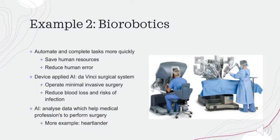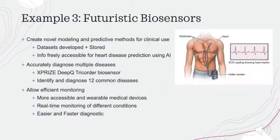Research has shown that AI-assisted robotic procedures resulted in five times fewer complications compared to surgeons operating alone. AI utilizes machine learning and has been successfully applied to biomedical sciences, opening new areas and tools and creating novel models and predictive methods for clinical uses, including cardiac diseases. Cardiac datasets from institutions such as Kelley University, the UK government, and the University of California, Irvine have been developed, storing information freely accessible for heart disease prediction using AI.